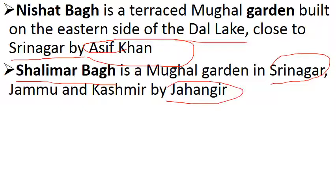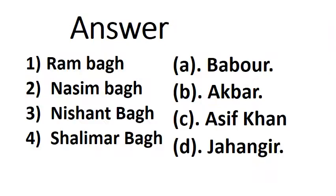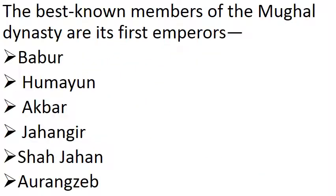These all are Mughal gardens, because these were all Mughal Emperors. So I hope you cleared all doubts. The answers are: Ram Bagh built by Babur, Nassim Bagh built by Ashif Khan, Salimar Bagh built by Jahangir. Don't ever get confused about these gardens. For more clarification, I have put the different successors of Mughal Emperors here.